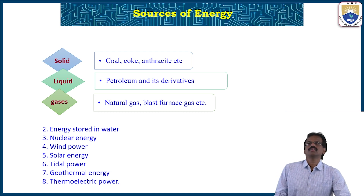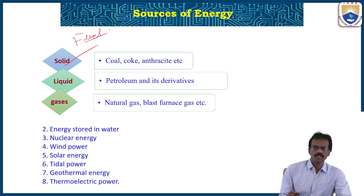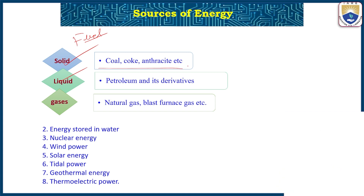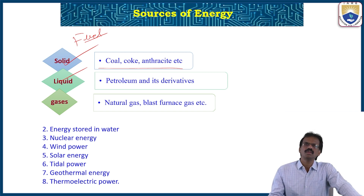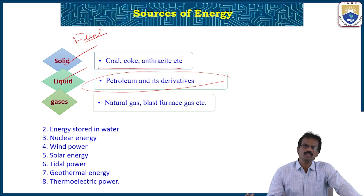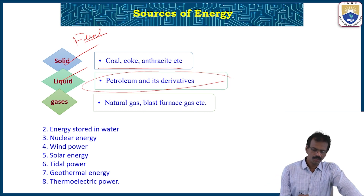In the last class we discussed the solid type of fuels — coal, coke, anthracite, bituminous — and liquid fuels including petroleum and petroleum products such as petrol and diesel. In this class we will see the gaseous fuels: what is the importance and advantage of gaseous fuels such as natural gas and blast furnace gas.